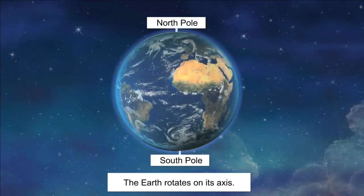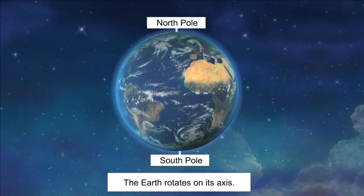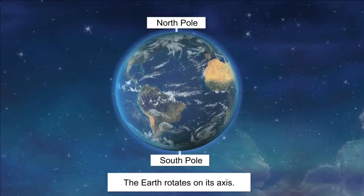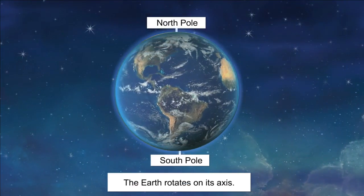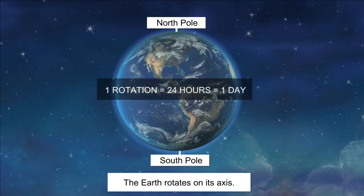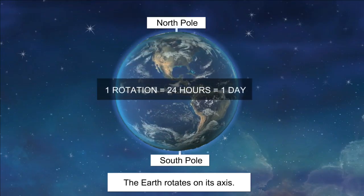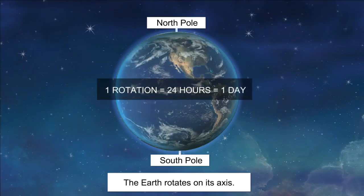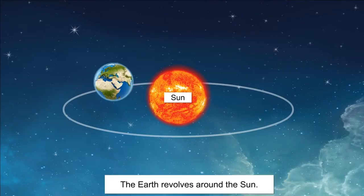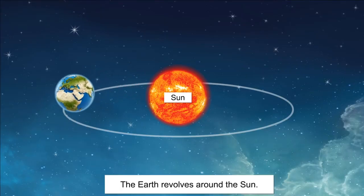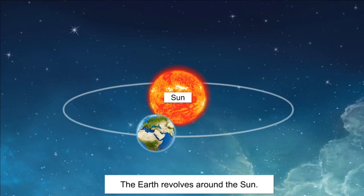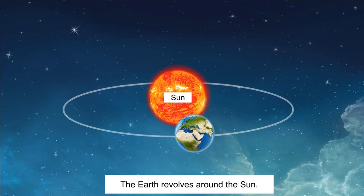We already know that the earth spins on its axis. This is known as rotation of the earth. It takes about 24 hours to complete one rotation. The earth moves in two ways — it also revolves around the sun.